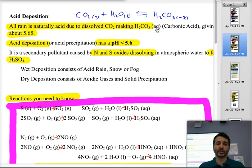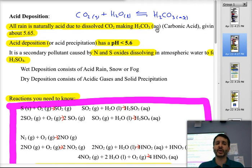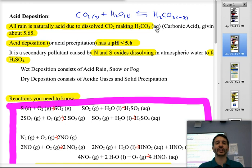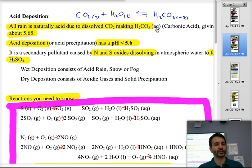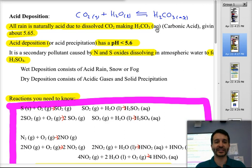We're going to continue with environmental chemistry and talk about acid deposition. Acid deposition refers to any of the acids that are formed or released into the atmosphere, which can then precipitate down onto materials, organisms, into the sea and lakes, etc.